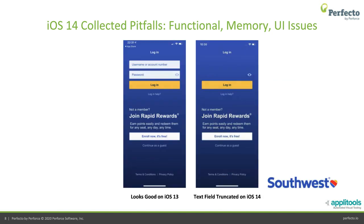In the Southwest Airlines application, we're seeing UI issues — exactly the kind a solution like Applitools would capture. On iOS 13 on iPhone 7, you see full text fields for username and password, but on iOS 14 these are truncated and cannot be seen. A new version of the Southwest app was released recently, so we'll need to check if this bug is resolved. These are just a few examples of bugs across visual, memory, and functionality categories — meaning you really need to start testing on iOS 14 today.